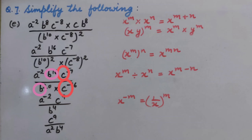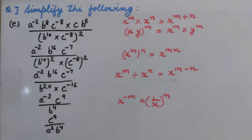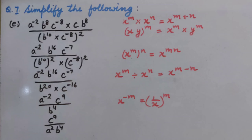Now same bases and division. So we use the law: X raised to the power M divided by X raised to the power N equals X raised to the power M minus N. Hence we get A raised to the power minus 2, C raised to the power 9 upon B raised to the power 4. Now we will make the power positive. So we get the answer: C raised to the power 9 upon A raised to the power 2, B raised to the power 4.